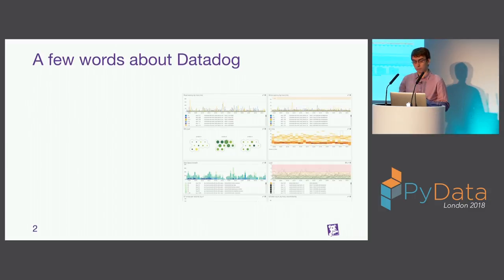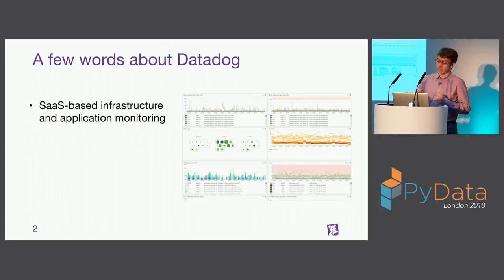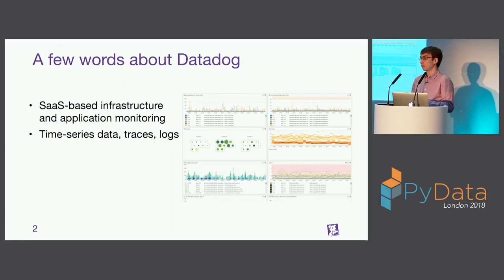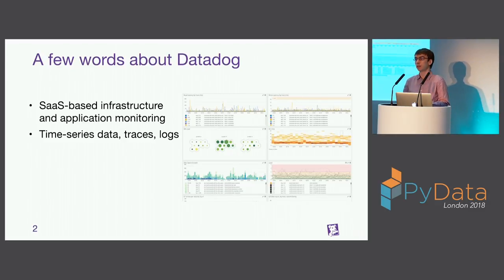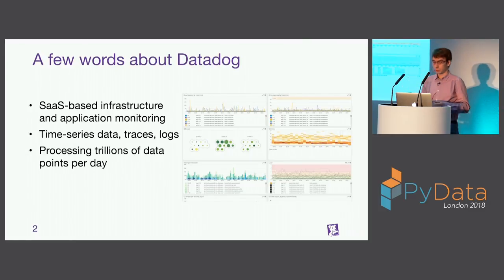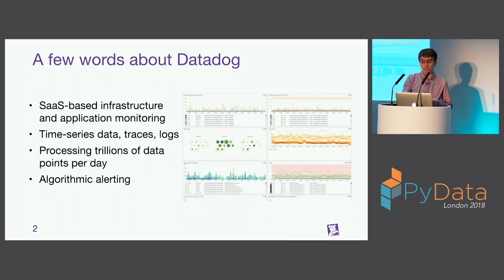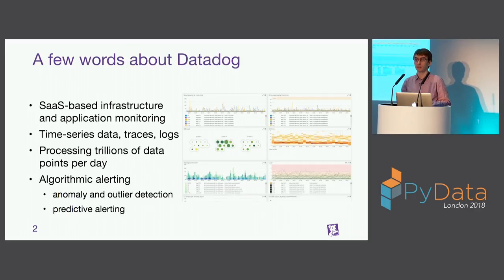Let's start with a few words about Datadog. Datadog is a monitoring platform for infrastructure and applications. It's SaaS-based. We collect metrics from applications, systems, and databases. Customers can also send custom metrics — application metrics or business-related metrics. We also collect application traces and logs. We process trillions of data points per day. We also have alerting features, including algorithmic alerting features that alert you when something is about to go wrong, such as anomaly detection and predictive alerting, which we need time series forecasting for.